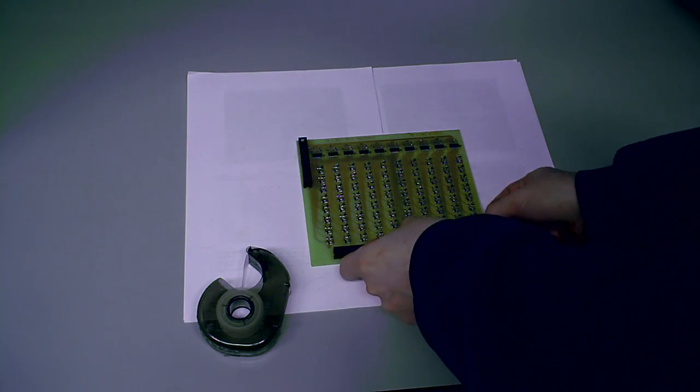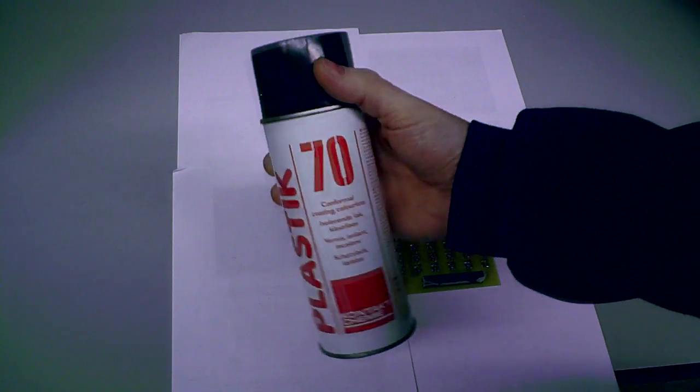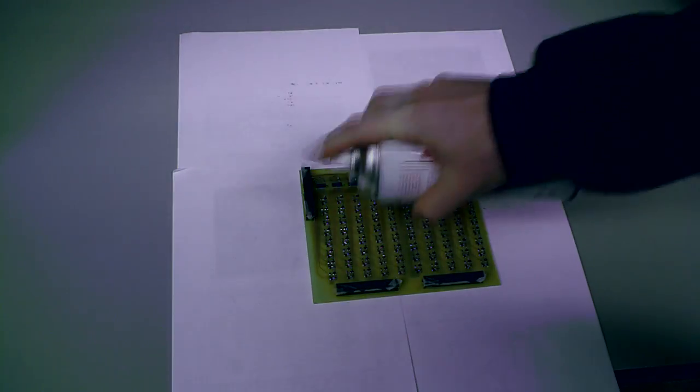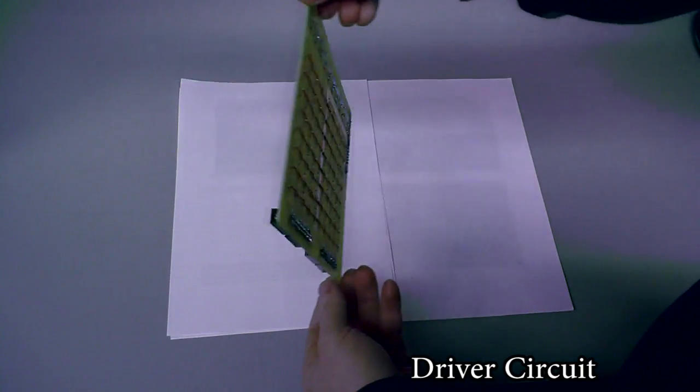To prevent the copper tracks on the PCB from oxidizing, I use Plastik 70, which serves as a protective coating. Now the PCB is ready.